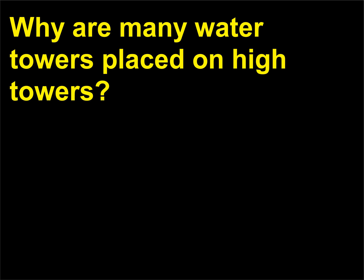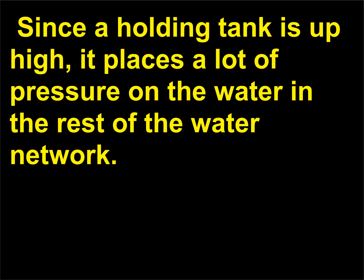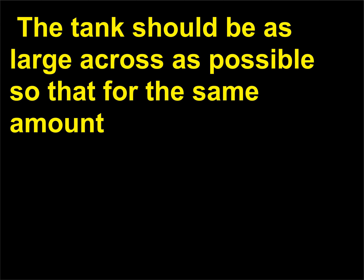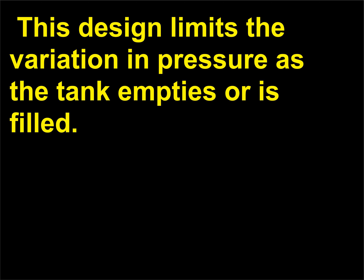Why are many water towers placed on high towers? The height of the water determines the pressure. Since a holding tank is up high, it places a lot of pressure on the water in the rest of the water network. The tank should be as large across as possible so that for the same amount of water, the vertical dimension can be as small as practicable. This design limits the variation in pressure as the tank empties or is filled.